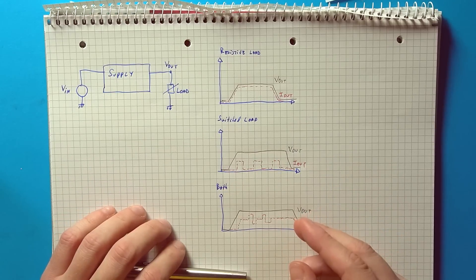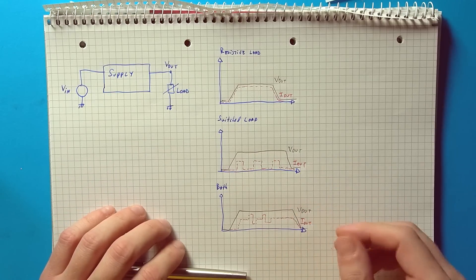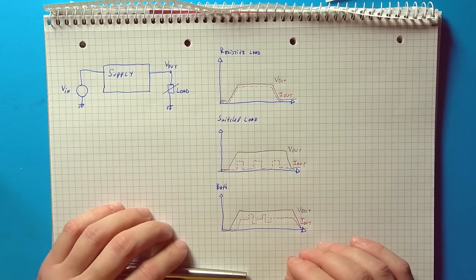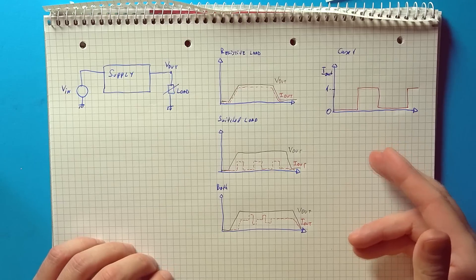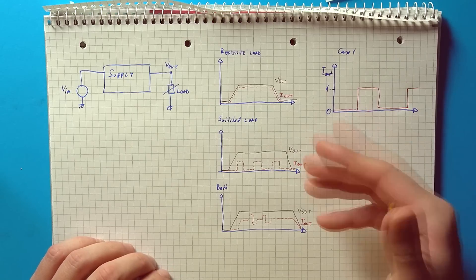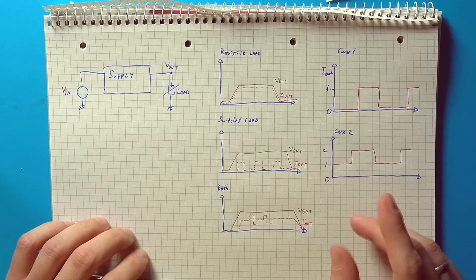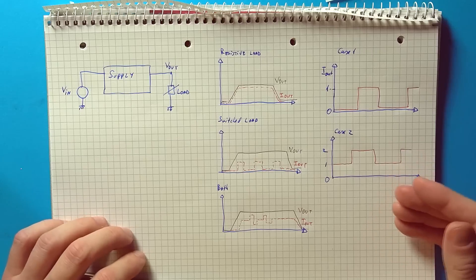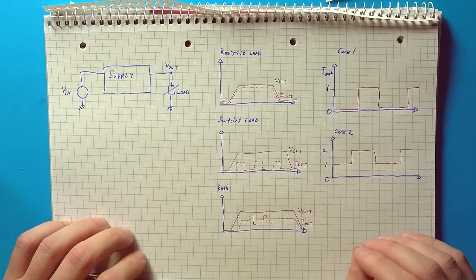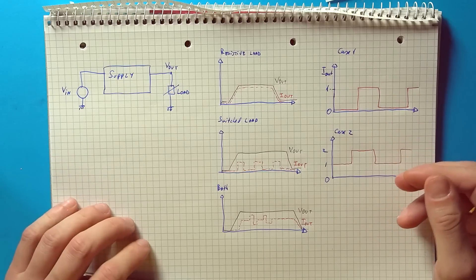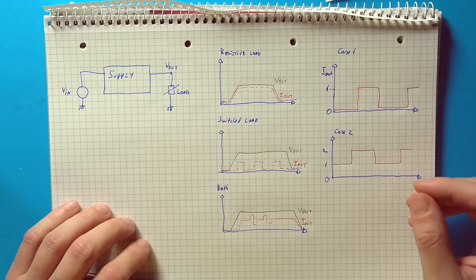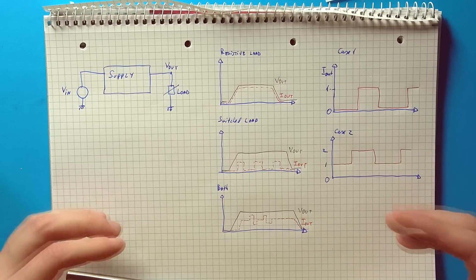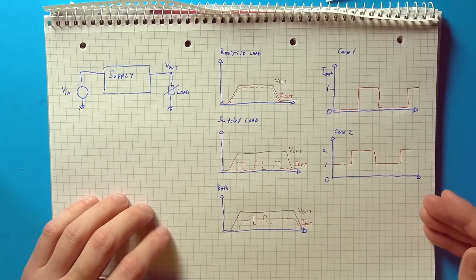Now the exact current steps and the constant current will be of course use case dependent and the extremes need to be checked. First you need to observe the variation from zero current to some value and then under a specific constant load the application of an extra amount of current. It's important to point out that the load step from say 0 to 1 ampere will lead to a different output behavior than a load step from say 1 to 2 amperes because the power supply can be in different operating modes.